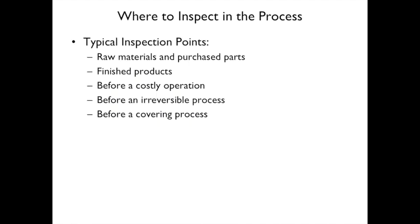Where to inspect in the process? Typical inspection points include raw materials or purchased parts, and finished products. Another key point is before a costly operation — if something is going to require an expensive operation, inspect it beforehand so that if there's a problem, it costs less to repair before that costly step is added. Also inspect before an irreversible process.